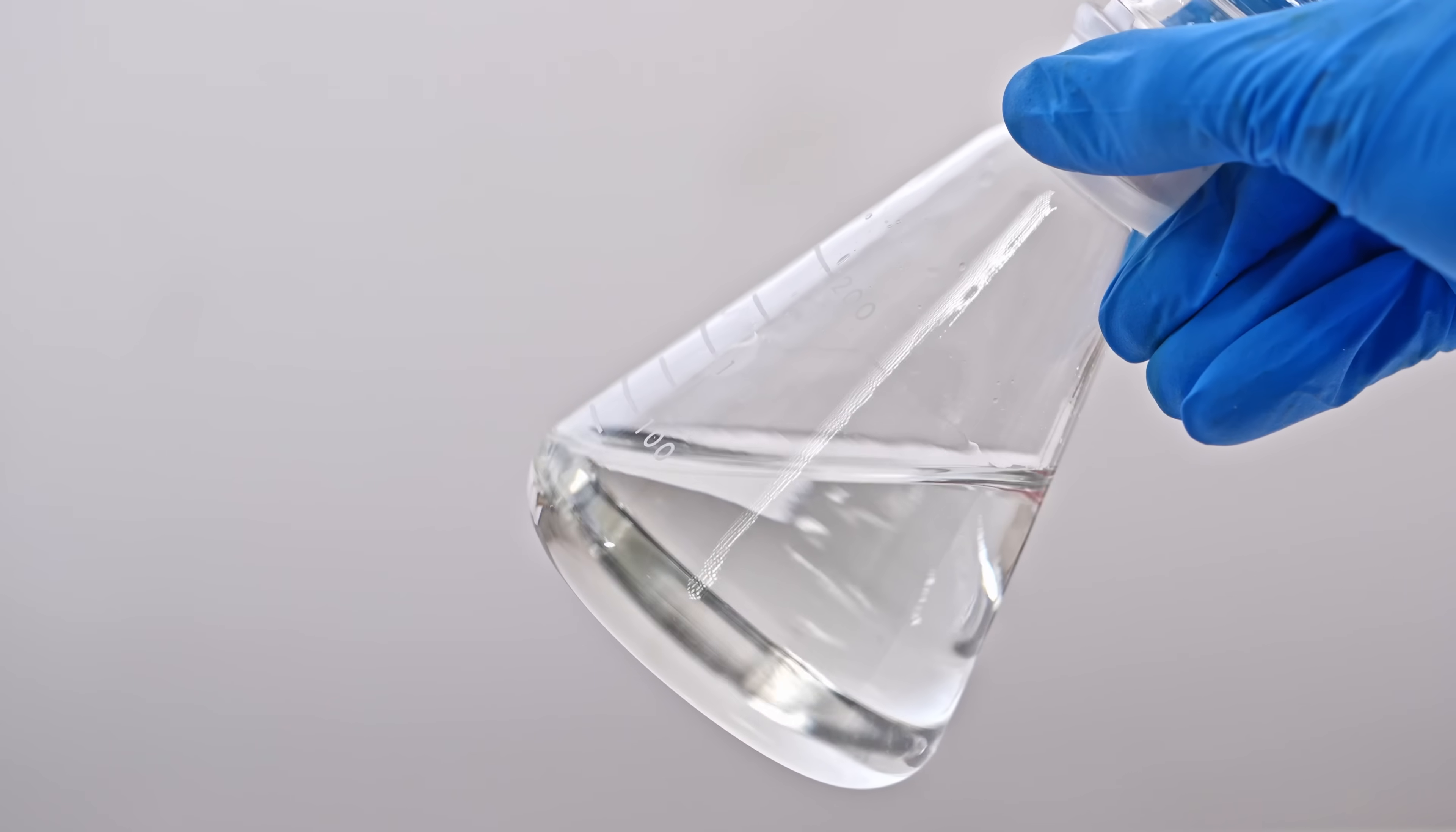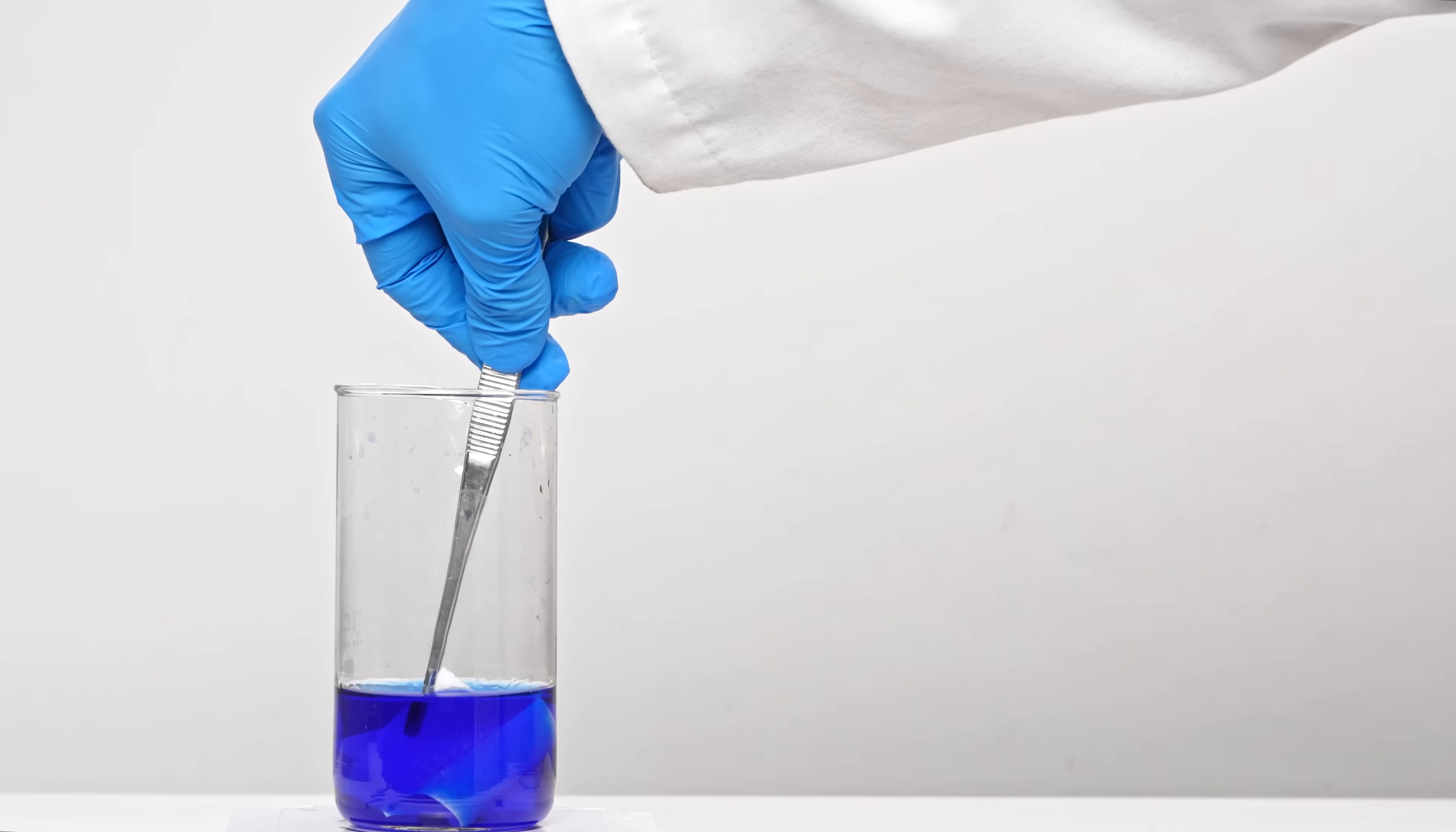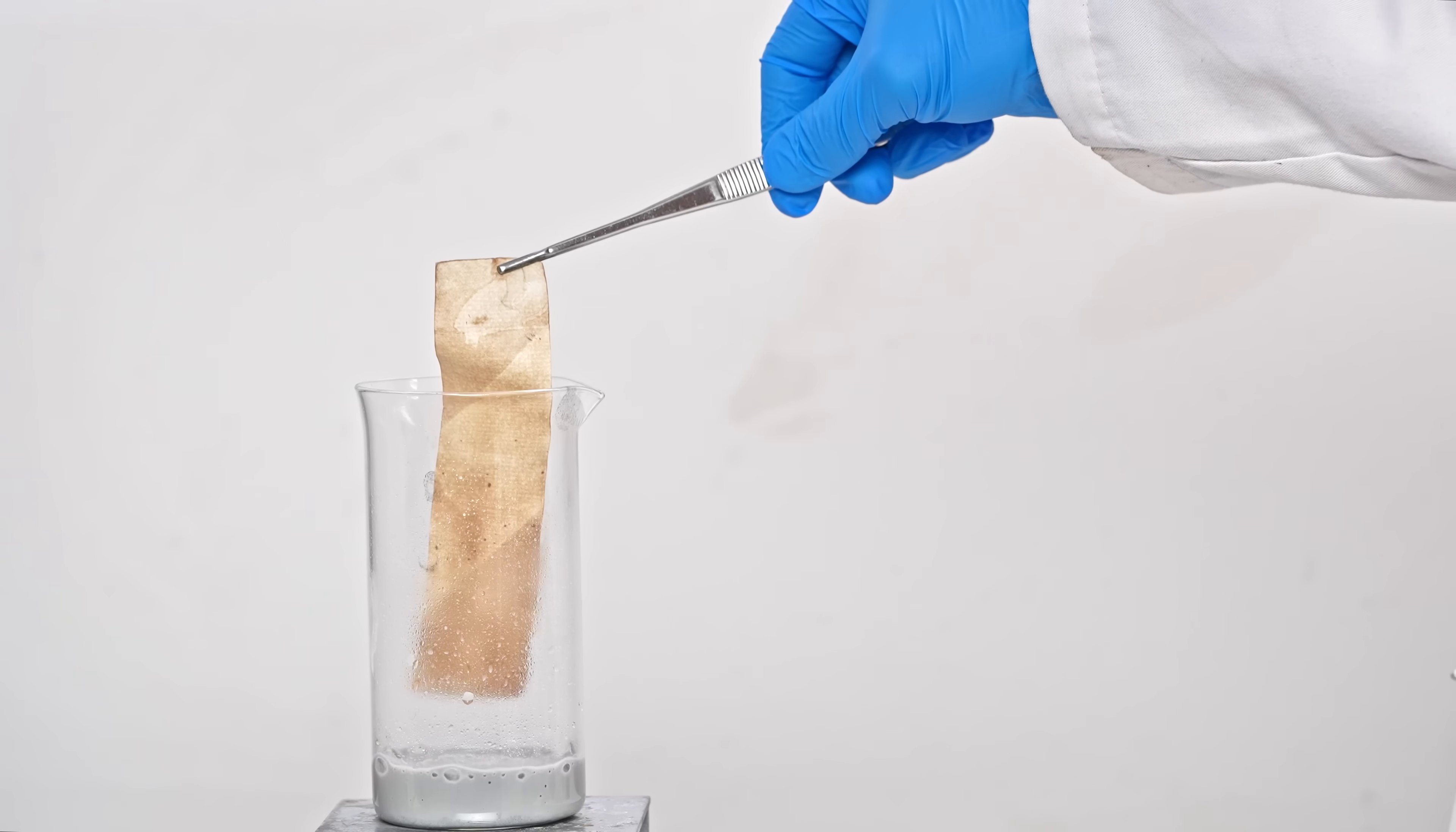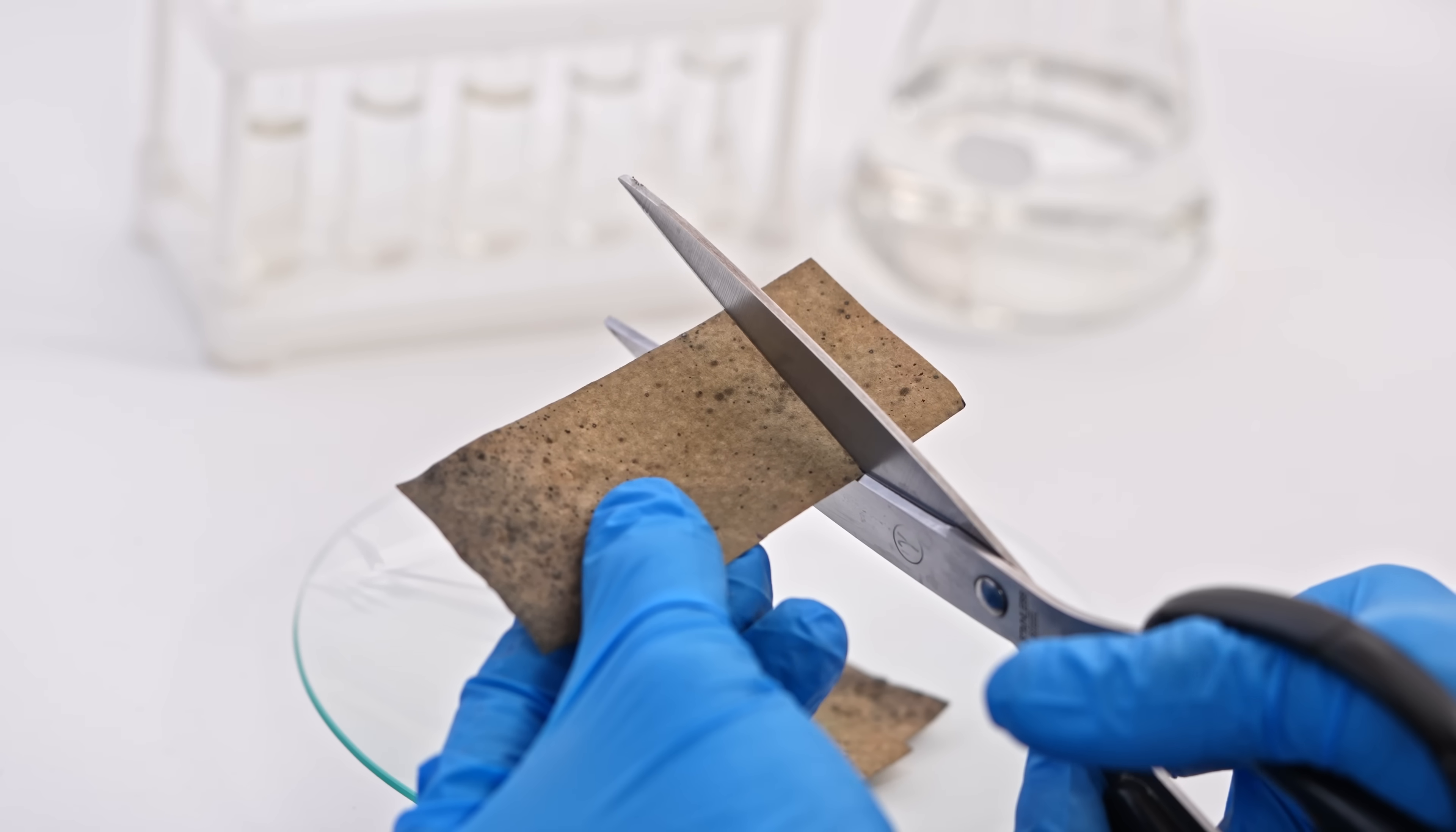To prove the solution contains cyanide, I'll prepare cyanide indicator paper. First, I mix copper sulfate with ammonia solution to create an ammonia solution of copper sulfate. Then I soak paper in this solution and expose it to hydrogen sulfide gas until it turns brown. After this we dry it and cut it into pieces. This will be cyanide indicator paper.